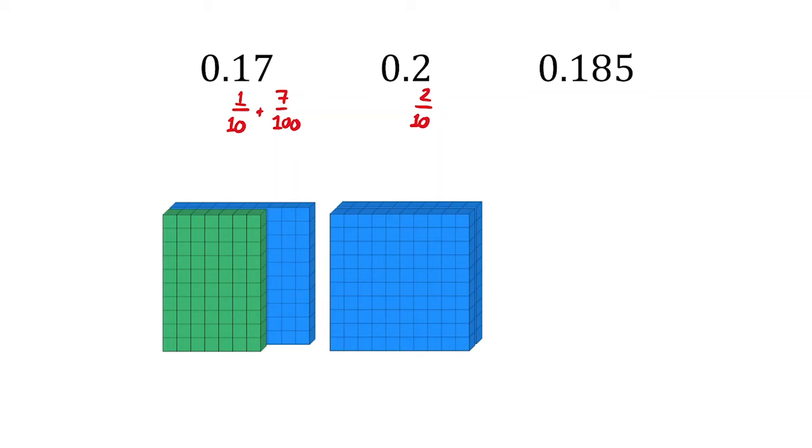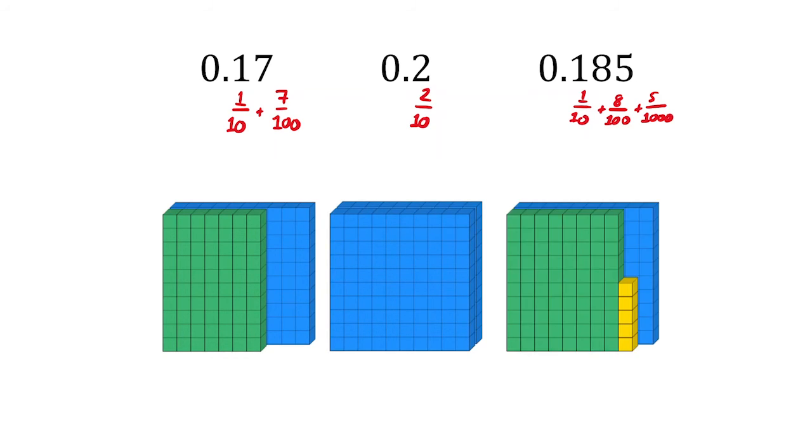0.185 similarly is one tenth, eight one-hundredths, and five one-thousandths, and so we build our model using one blue, eight greens, and five yellows.